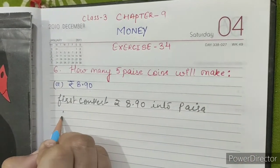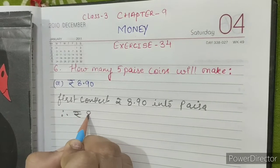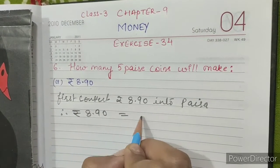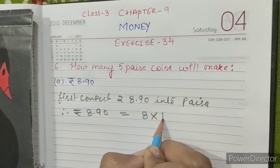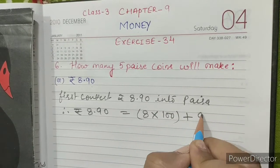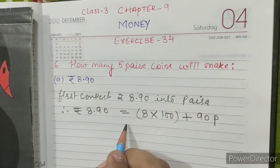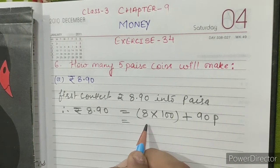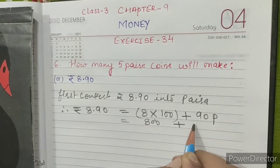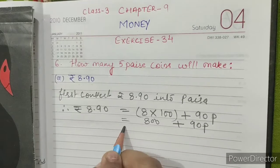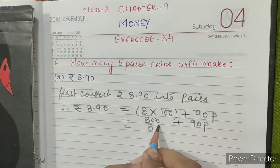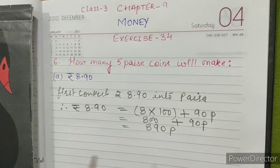Therefore, Rupees 8.90 equals 8 into 100 plus 90 paise. 8 into 100 is 800, plus 90 paise. 800 plus 90 equals 890 paise.